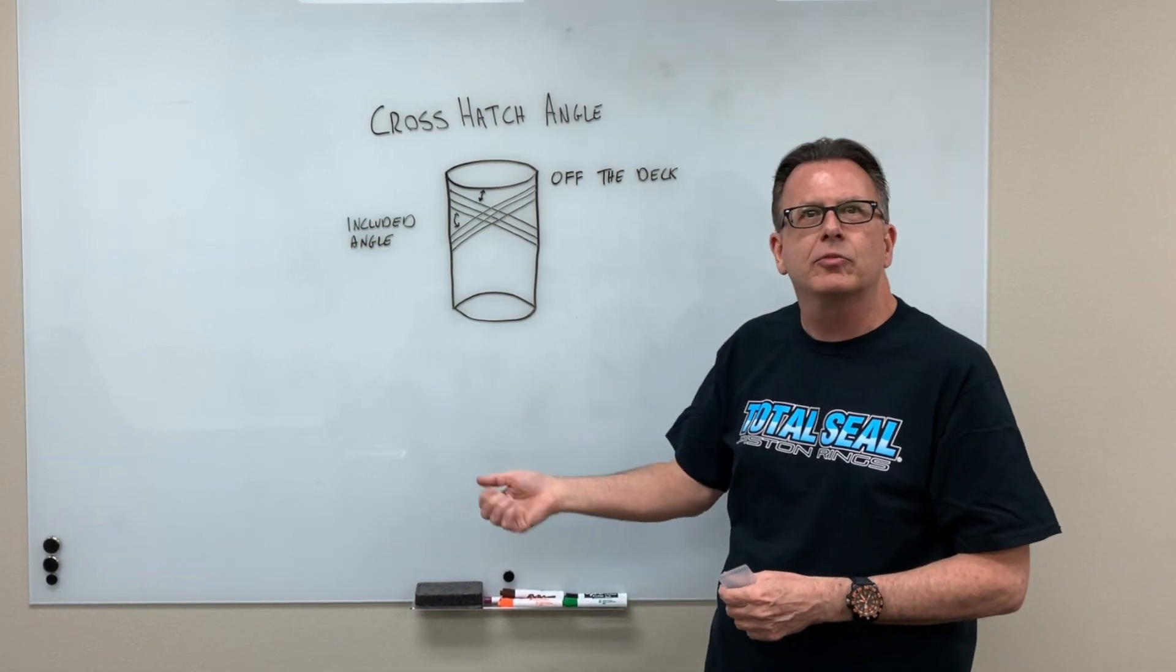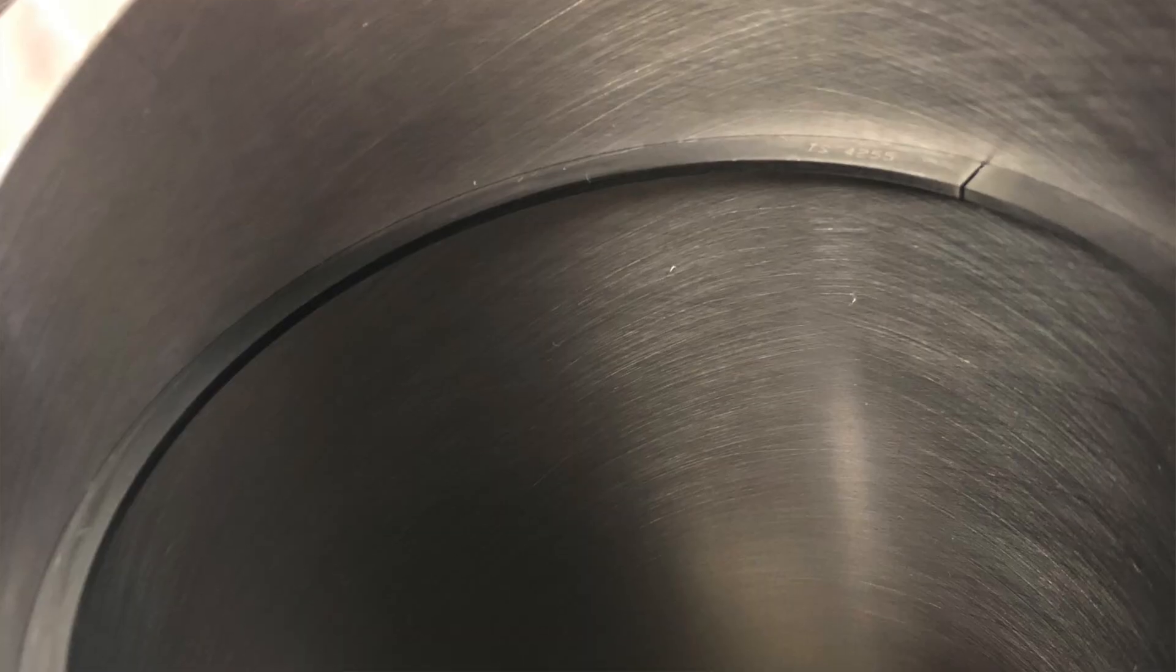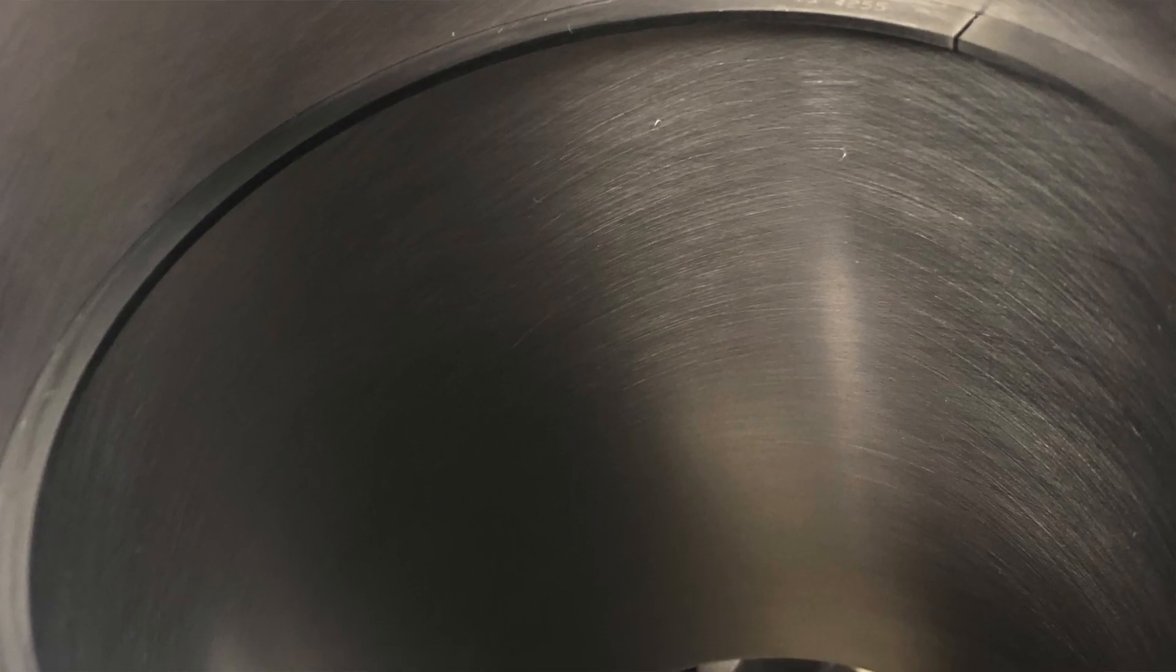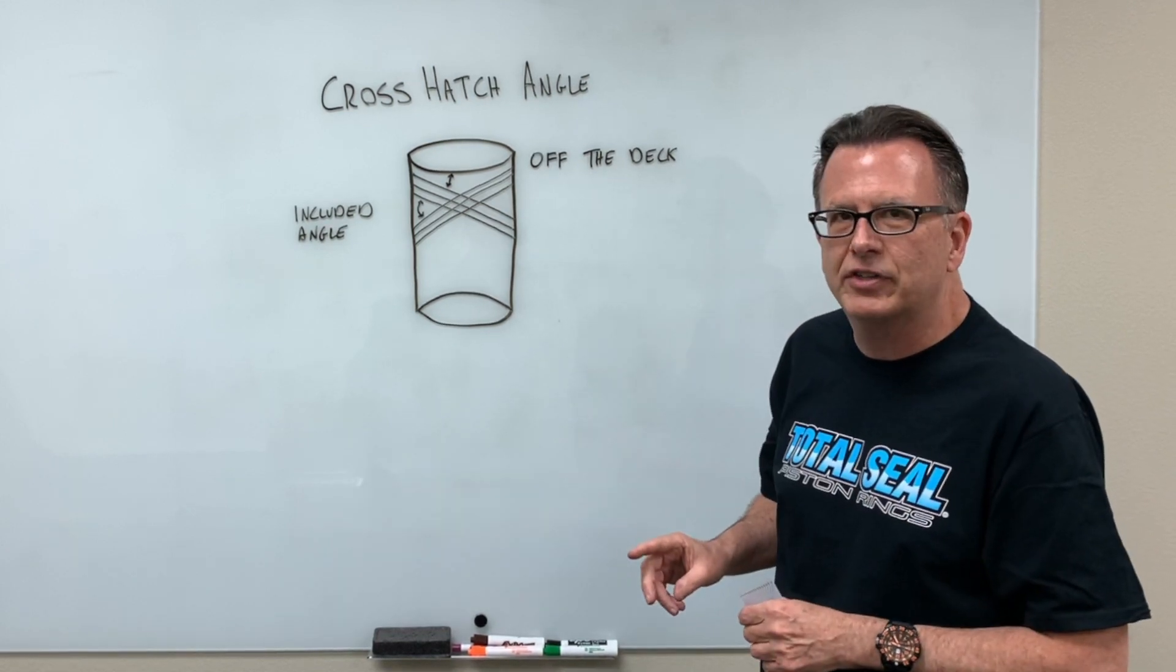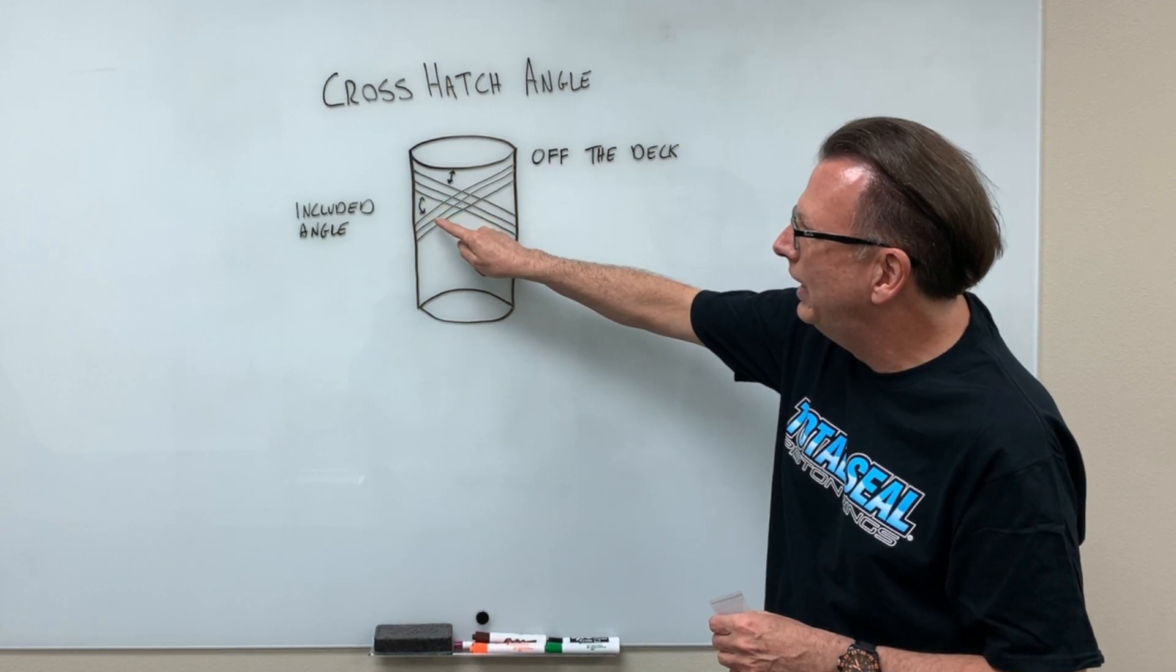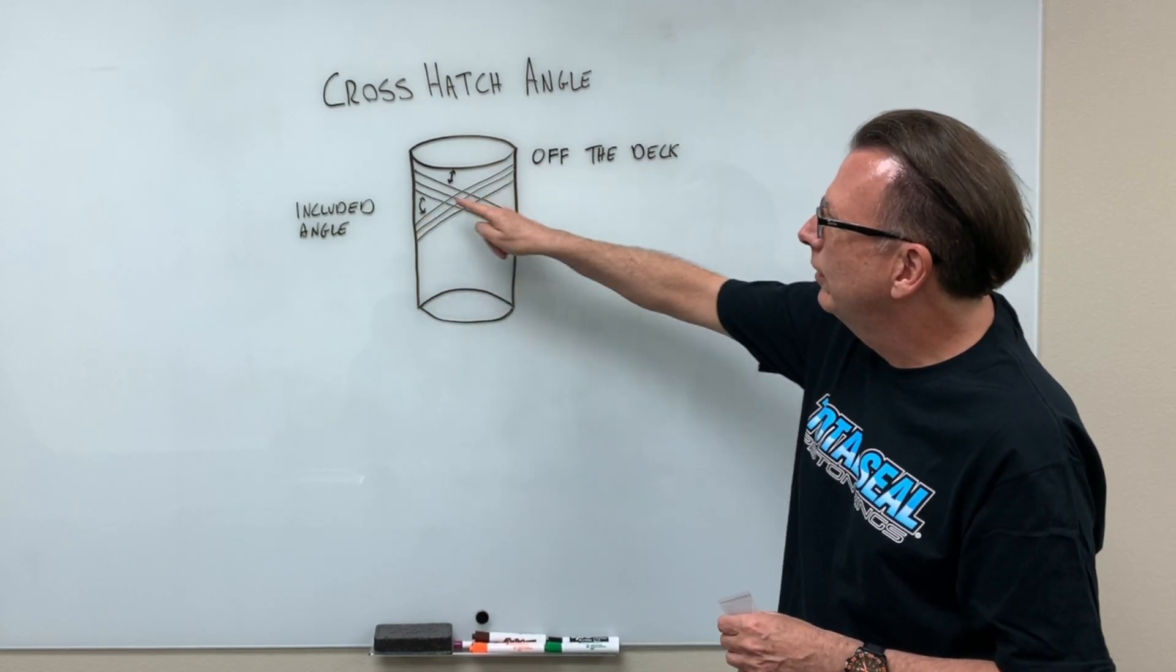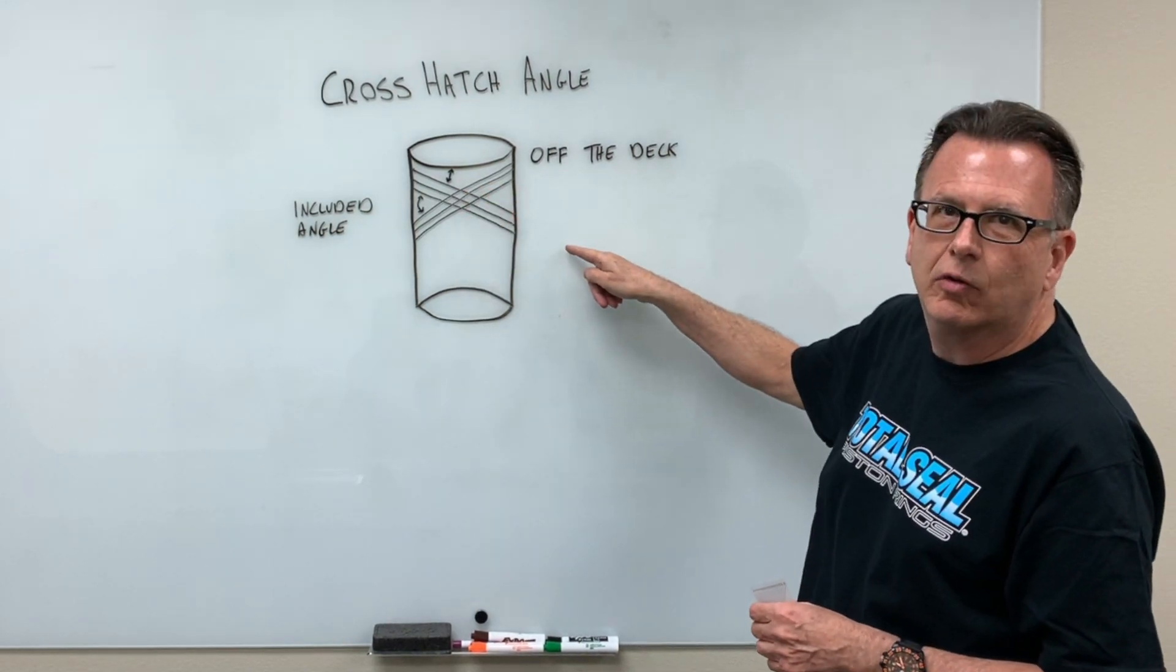Now when you hear the terms 45-degree crosshatch angle, that's your very common crosshatch angle for most typical V8 engines, most four cylinders, just about everything out there runs a 45-degree crosshatch angle. And that is what is known as the included angle. It is the angle between the ascending and descending crosshatch line.